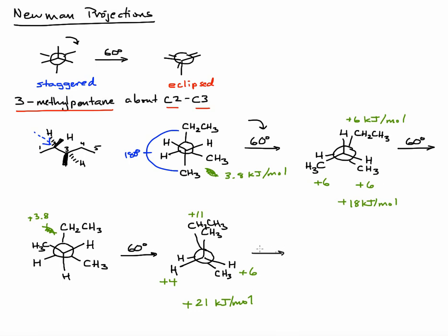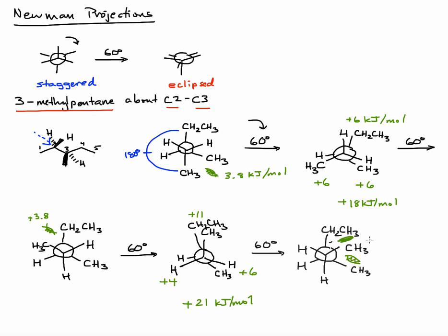One more 60-degree rotation. The front carbon has the methyl group with hydrogen and hydrogen. Drawing the rear carbon as a circle with the ethyl group at the top, methyl group to the right, and hydrogen. Estimating the energy penalty, we have two gauche interactions — one methyl-methyl gauche interaction each at +3.8 kJ/mol — giving a total of +7.6 kJ/mol for this conformation.